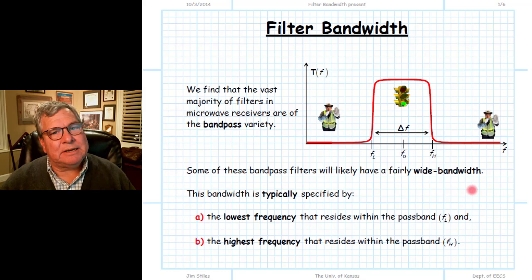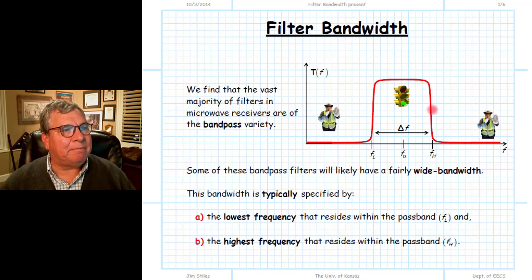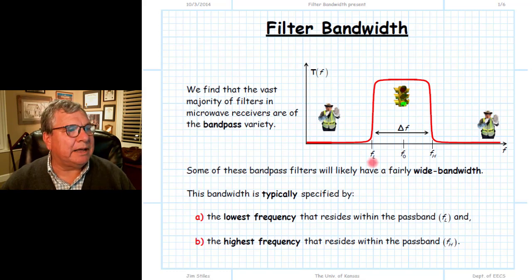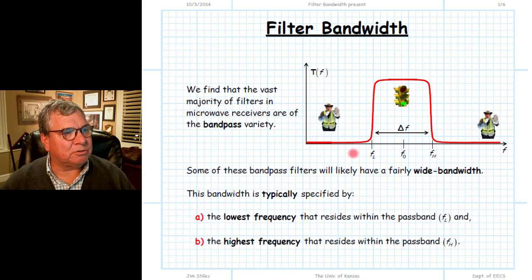For wideband filters, the bandwidth is defined typically with two numbers: one frequency which defines the highest half-power cutoff point, and the second frequency, a lower value, that describes the second half-power point. These frequencies are almost always described in Hertz.